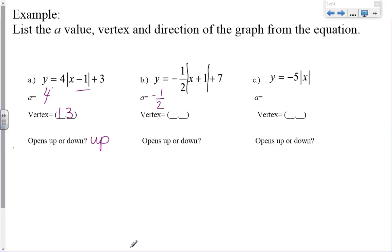The vertex, I have to take the opposite of what's inside there. So if it's a positive 1, my vertex is a negative 1. But that k value stays the same. So my vertex is negative 1, 7. The a value is negative, and it's going to open down.